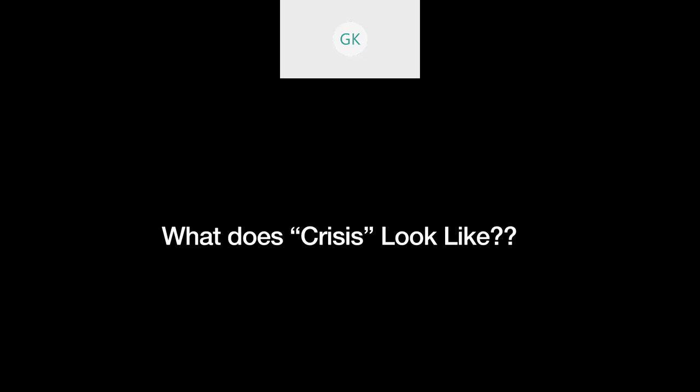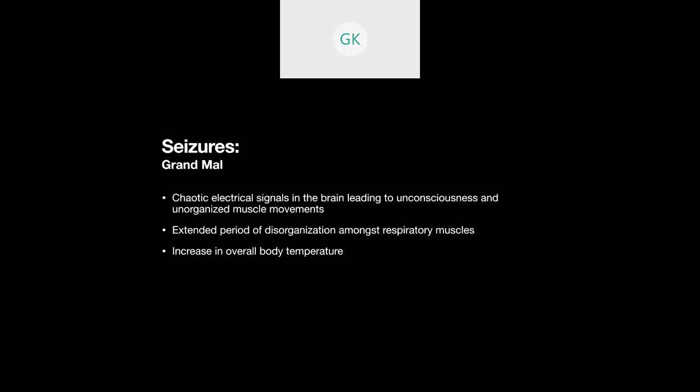So with that in mind, let's talk about what specifically crisis looks like. All right. So our first case here, have a 25 year old male, have some convulsions at work, post-ictal upon EMS presentation, GCS of about six, but improving. The GCS was three per the bystanders after seizing for about six minutes of witness convulsions. So I want you to ask yourself, should we expect this patient to be in some sort of crisis? And what can we look at to tell us that?